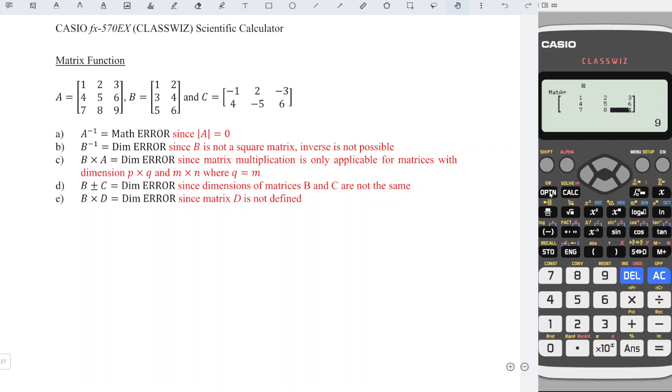Proceed to the next matrix option. Define matrix B, number 2. We have 3 rows and 2 columns. So we press 1, 2, 3, 4, 5, 6. Done.